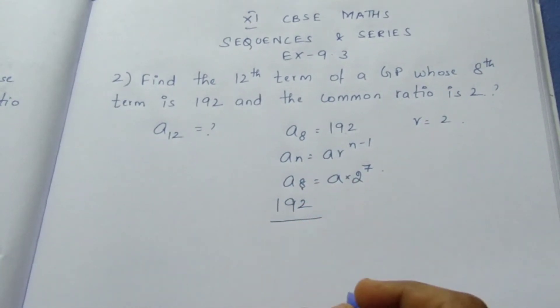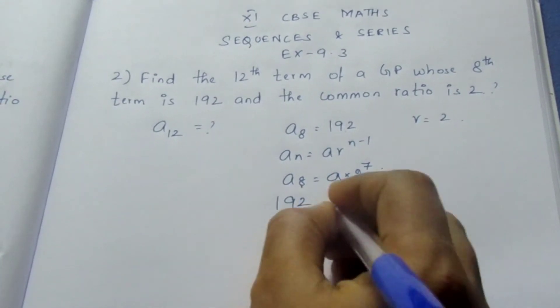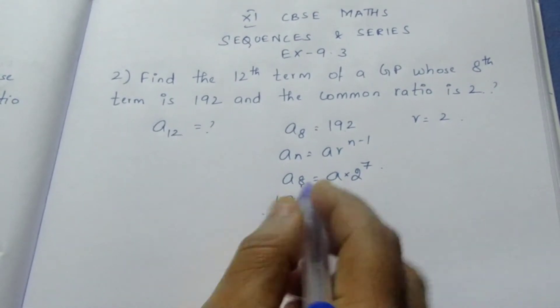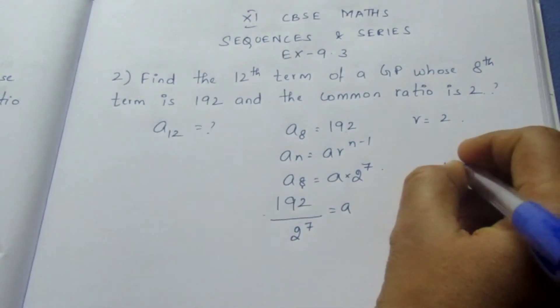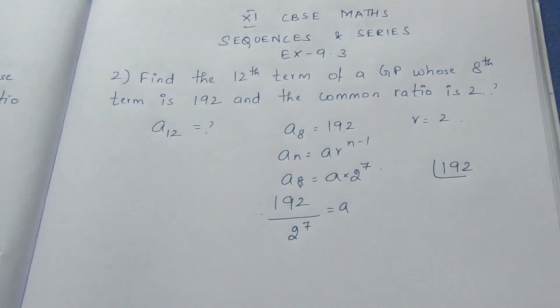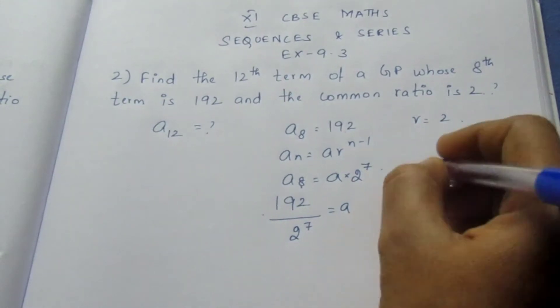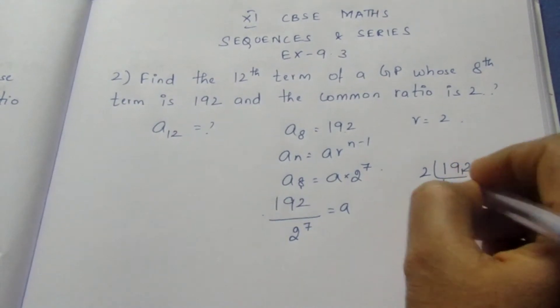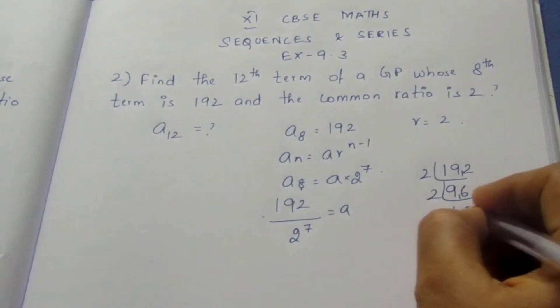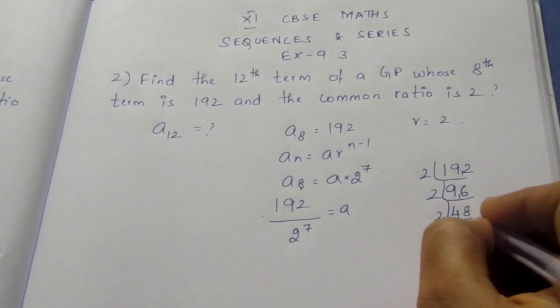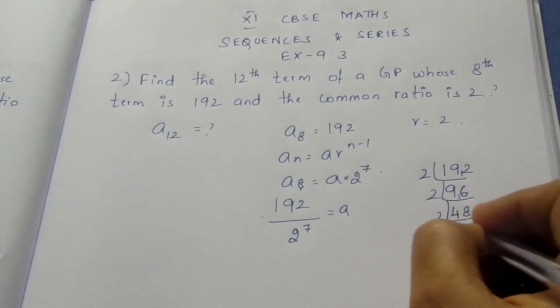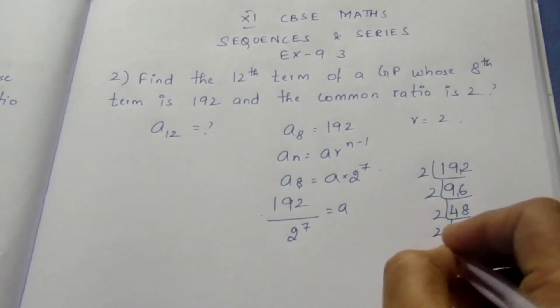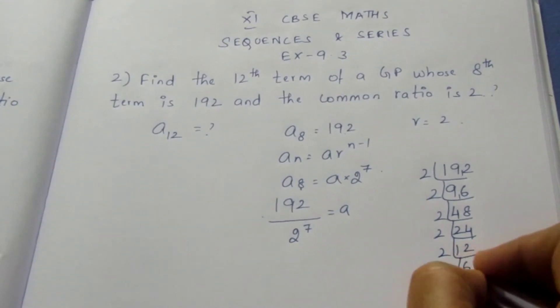So now do prime factorization, quite easy. Instead of multiplying, do prime factorization for 192. 2 into 96, 2 into 48, 2 into 24, 2 into 12, 2 into 6, 2 into 3.